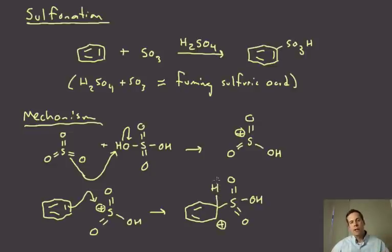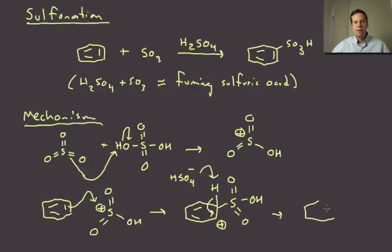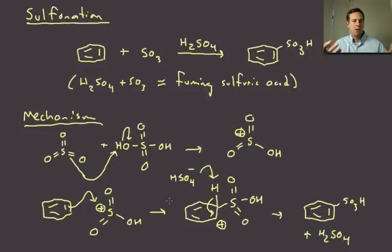As you are now very familiar with, we need to deprotonate, regain aromaticity. We're just going to go ahead and use the anion from the sulfuric acid. The HSO4 anion is just going to grab its proton back, regain aromaticity. When we do that, we have achieved our sulfonation. The side product here is H2SO4, which again is the thing we started with to generate the electrophile. So again, H2SO4 counts as a catalyst.